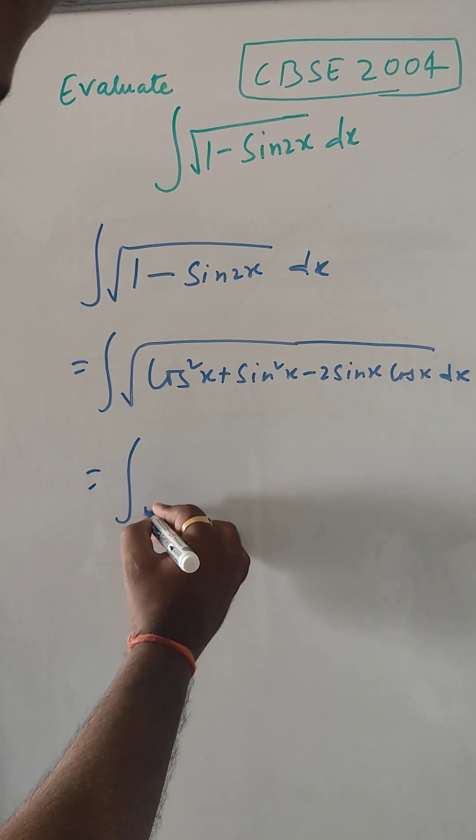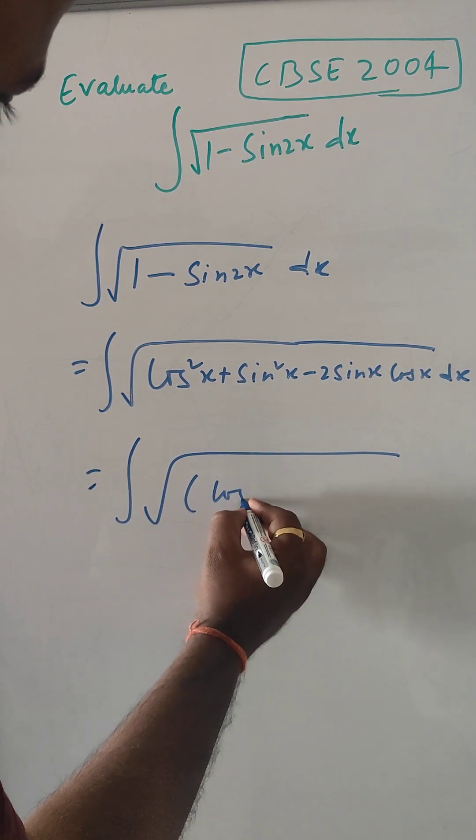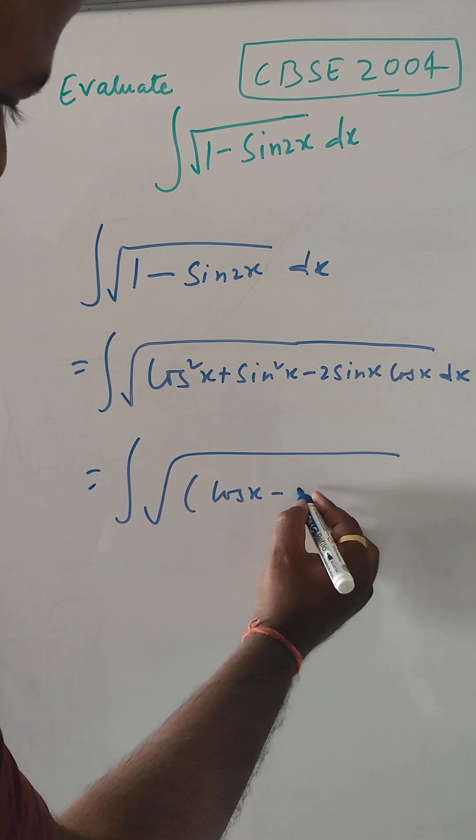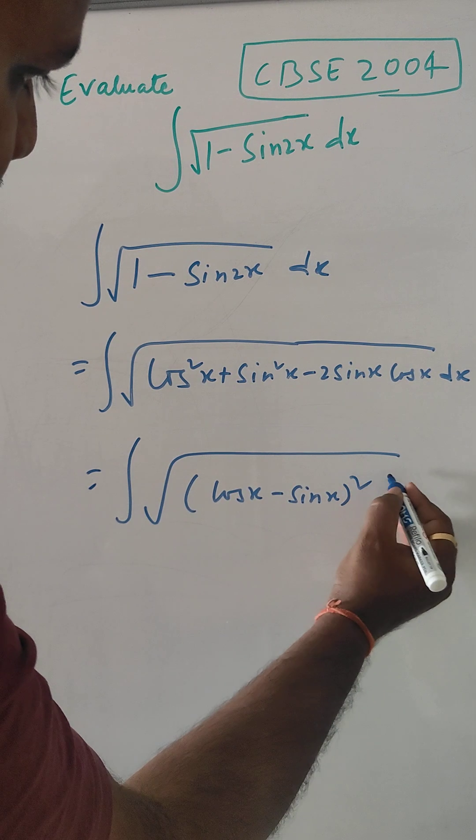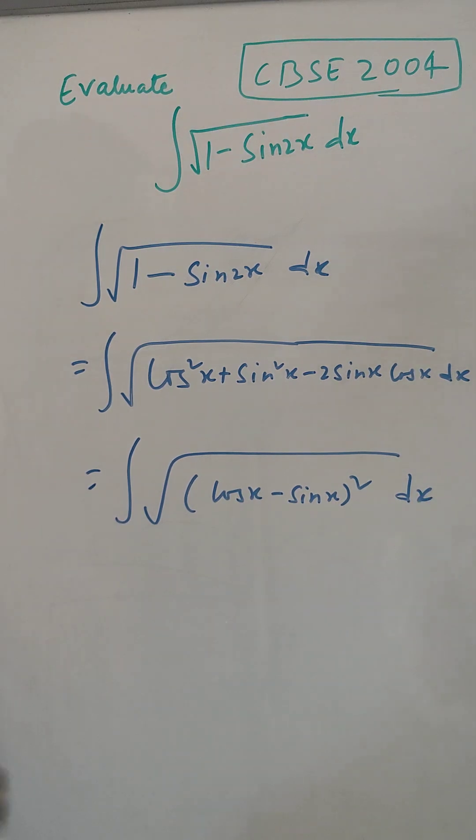So, this can be written as cos x minus sin x whole square dx, correct.